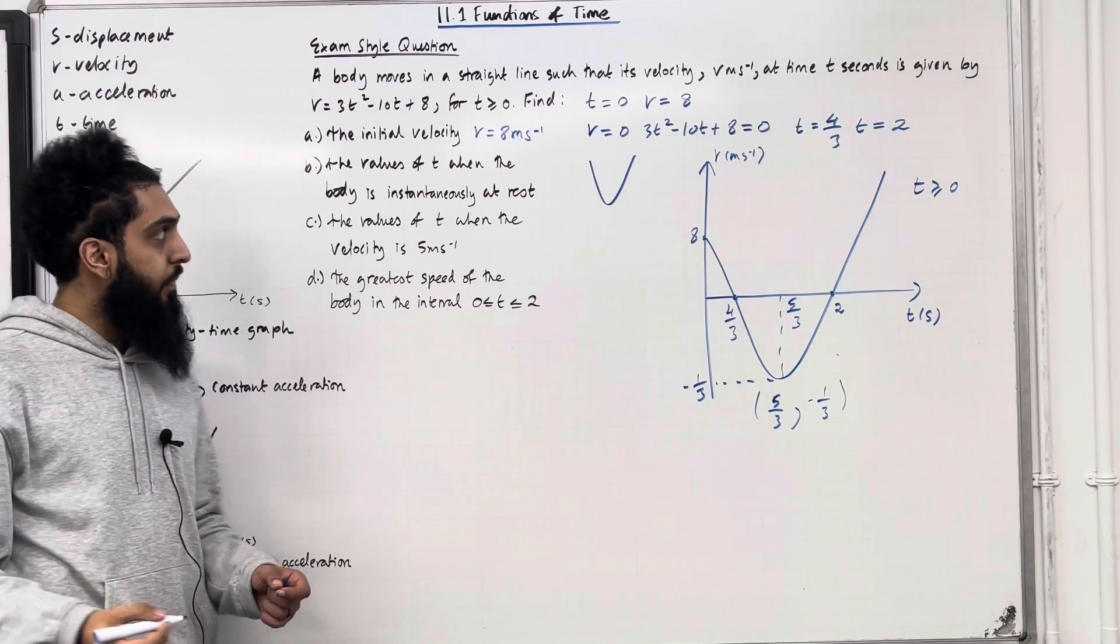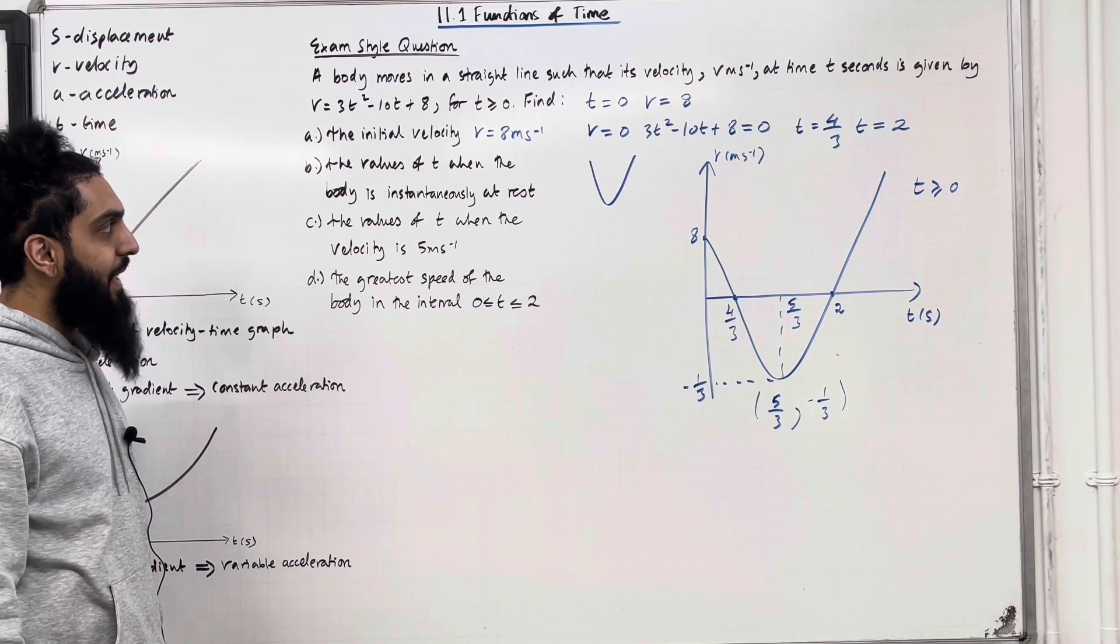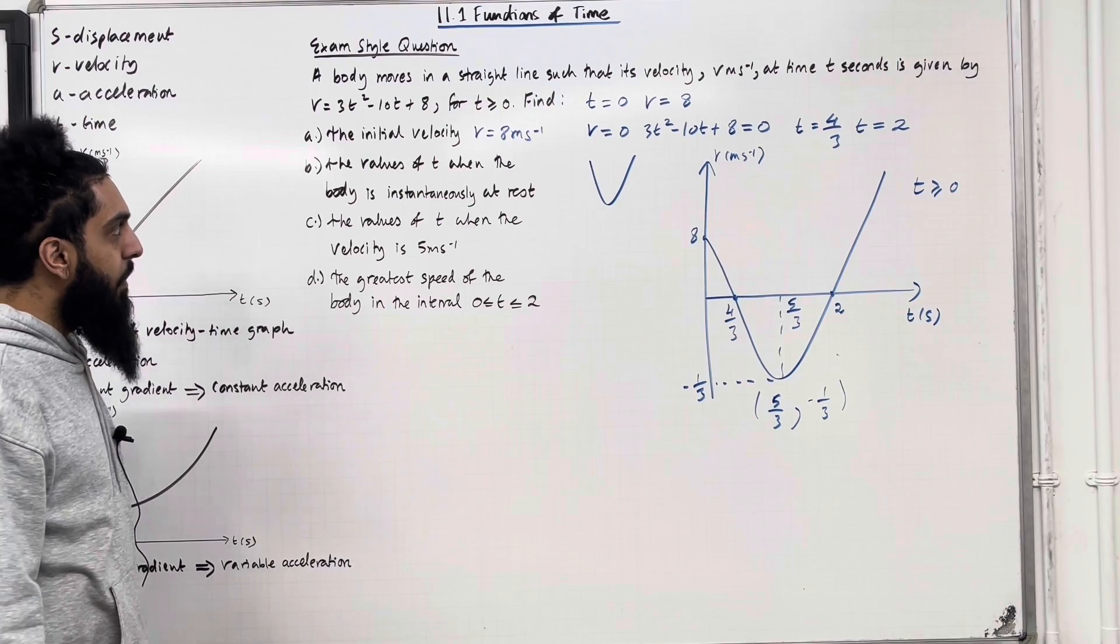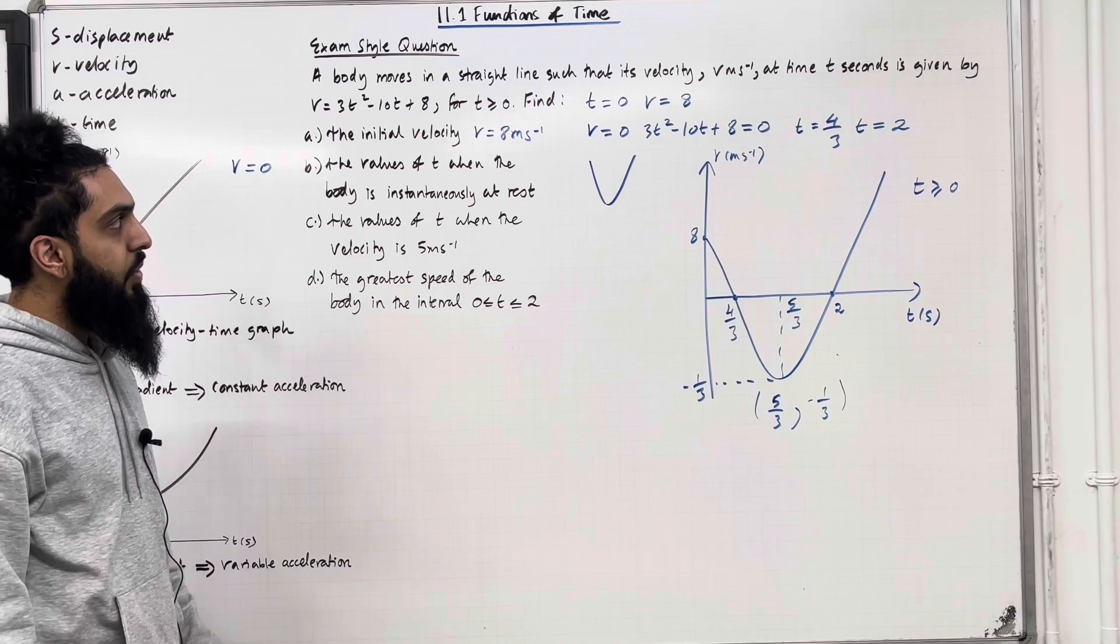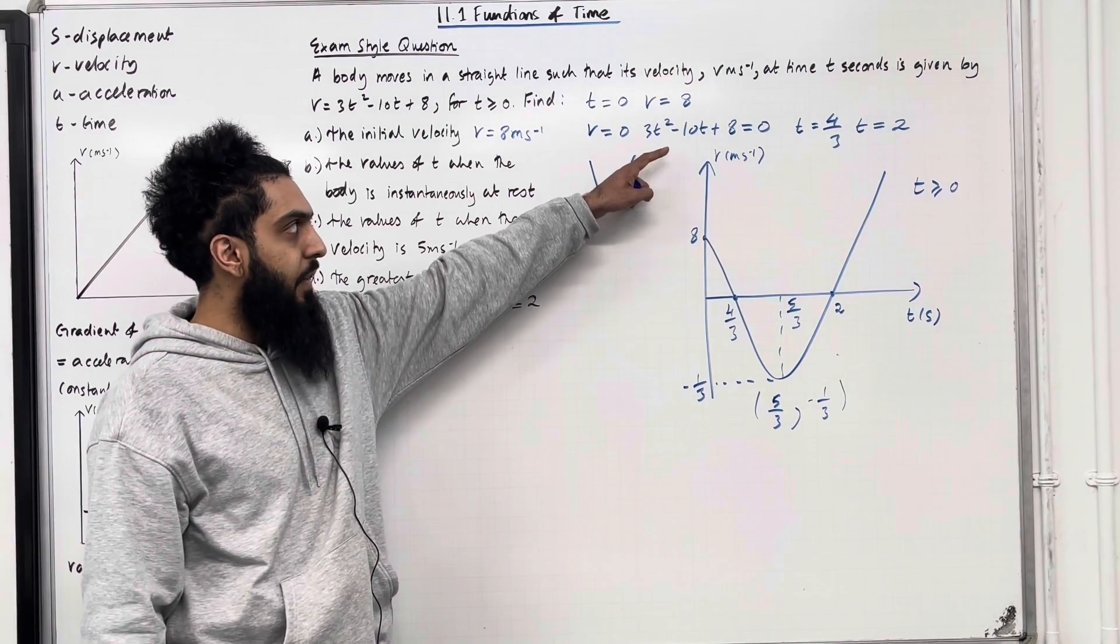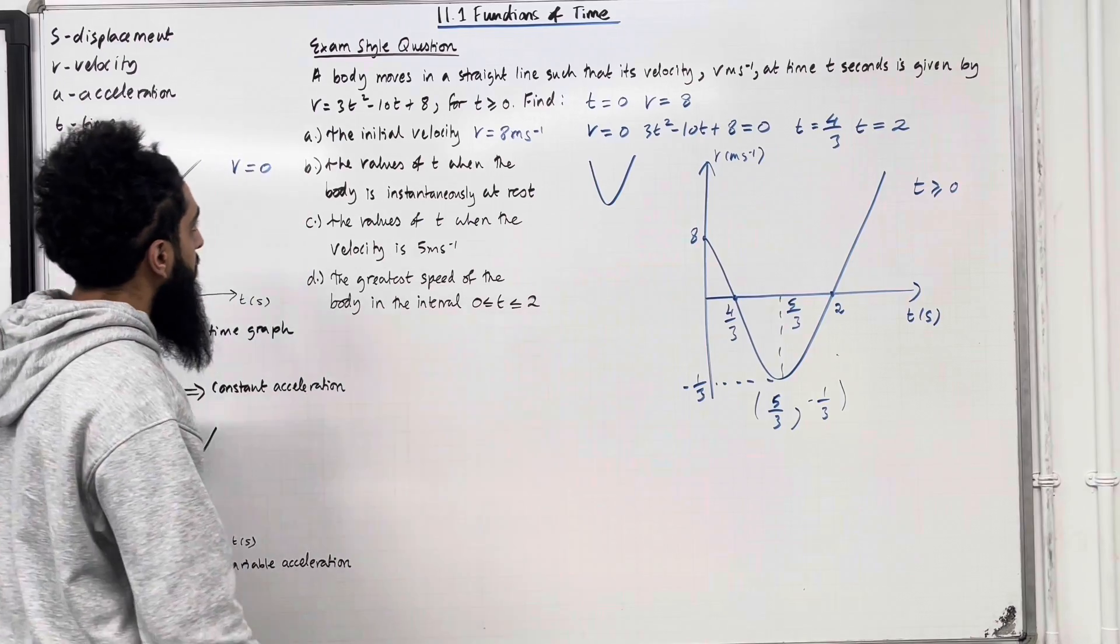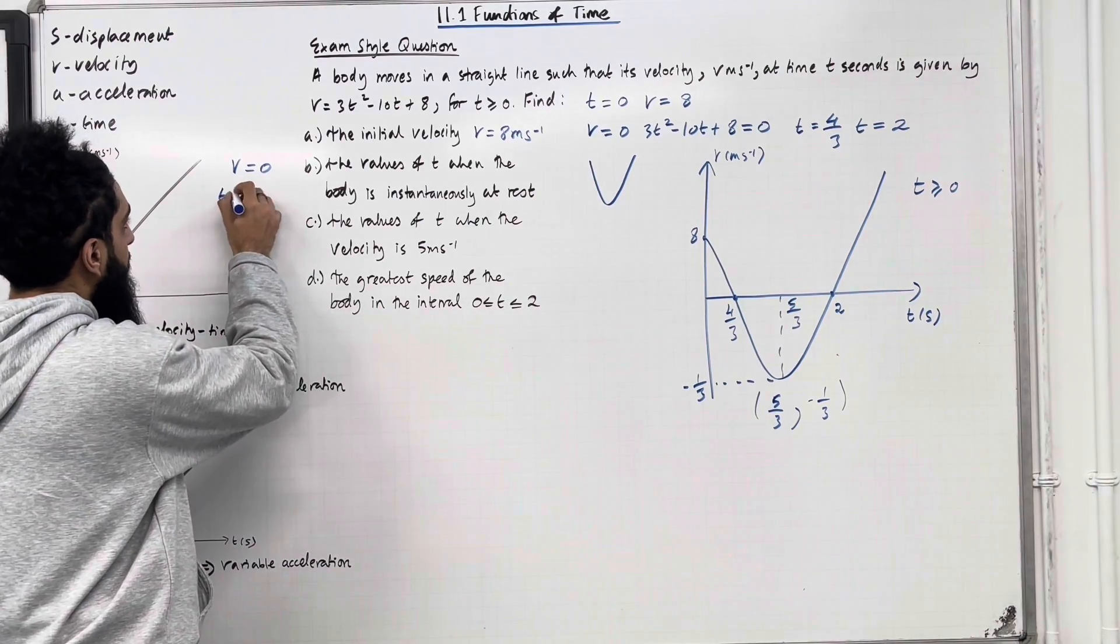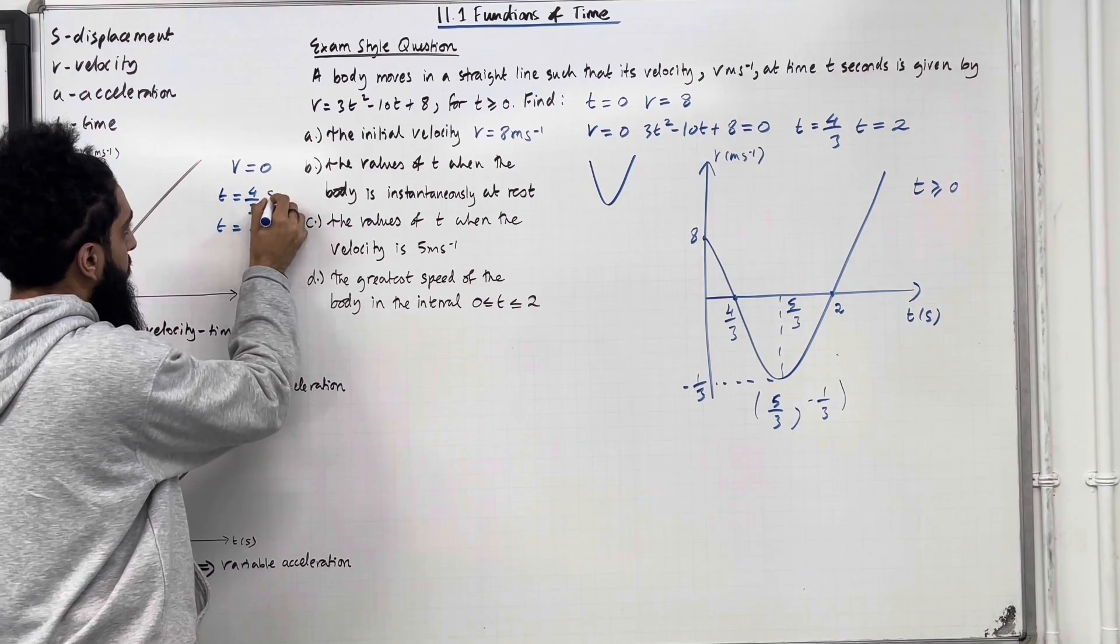Part B of the question, I want to work out the values of t when the body is instantaneously at rest. So when the body is at rest, we know that v is equal 0. So when v is equal 0, we get this quadratic equation. I've solved it and I've got t equal 4 over 3, t equal 2. So for part B, we've got t equal 4 over 3 and t equal 2 seconds.